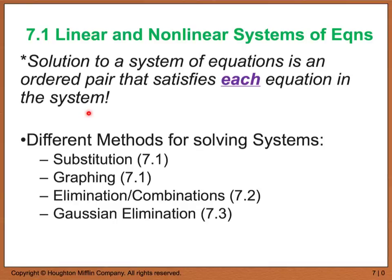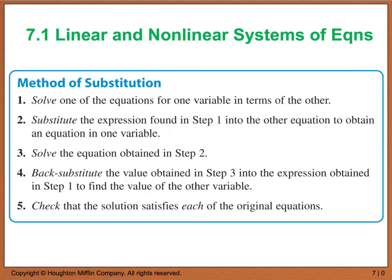Within chapter 7 we are going to review different methods for solving systems of equations. In section 7.1 we're going to look at the substitution and graphing methods. In 7.2 we're going to look at eliminations or combinations. And in 7.3 we're going to look at what we call the Gaussian elimination method. I know you've talked about these in algebra 1 and algebra 2, but just to reiterate what the key points or key differences are.